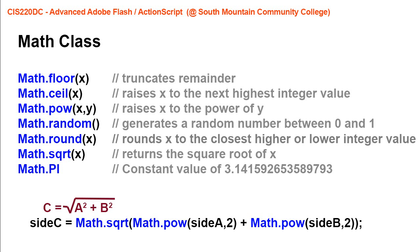To represent that in an ActionScript 3 statement, we want to find the value of side c. Side c would equal math.sqrt, and then inside parentheses we want to do a squared plus b squared using the pow method. So math.pow — we raise side a by squaring it, so value of 2, plus side b raised to the value of 2: math.pow(b, 2).